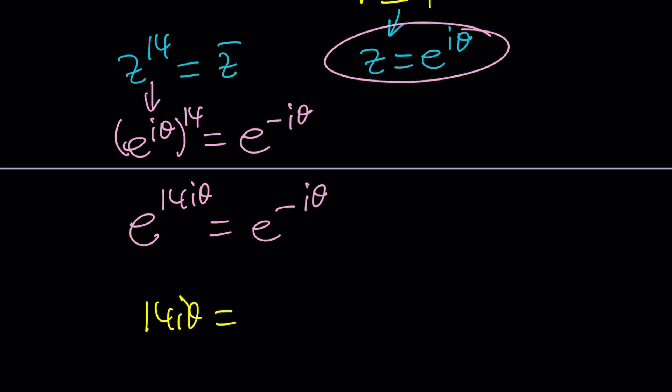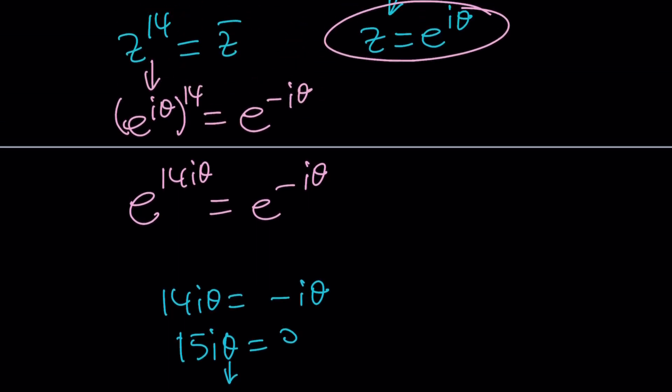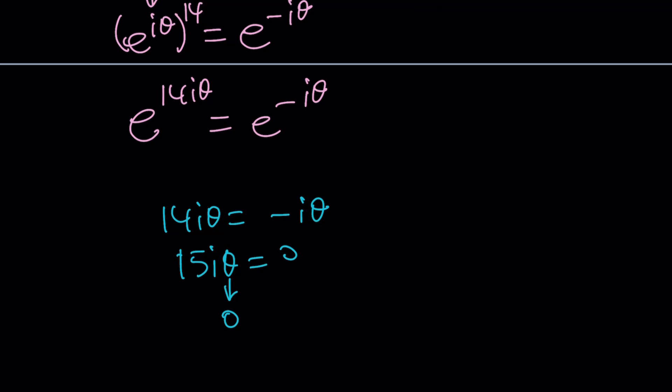If you go ahead and set these equal to each other, 14 I theta equals negative I theta, and then kind of like cancel out the I theta, you get 14 equals negative 1, if you're trying to be silly. If you want to be serious, then you probably want to do a little differently and kind of write it like this, maybe add I theta to both sides, and that's going to give you 15 I theta equals 0. I can't be 0, 15 can't be 0 as far as we know, theta needs to be 0. But is 0 the only value? That's kind of like very limited. We don't want that. There's absolutely a better way to do this.